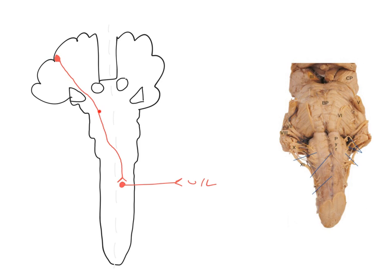The corticospinal tract passes down through the pons. The axons run quite deep but pass down and through the pons. When they get to the end of the pons they enter the medulla, and that's where they enter structures called the pyramids. There's the left pyramid and the right pyramid — clear bulges on the ventral surface of the medulla which carry those corticospinal axons on their way down into the spinal cord.